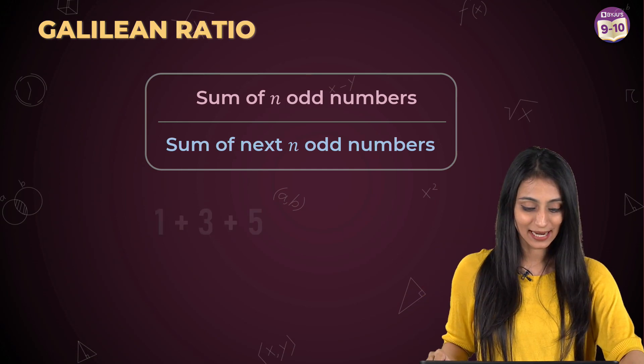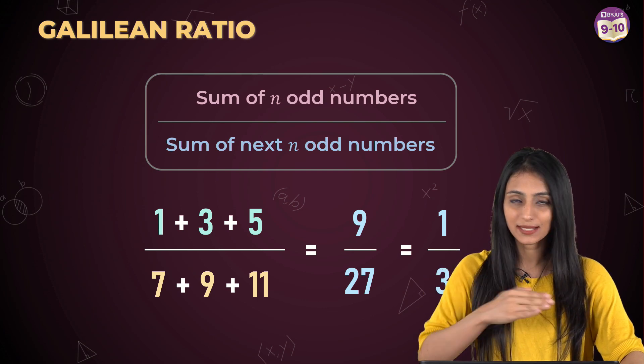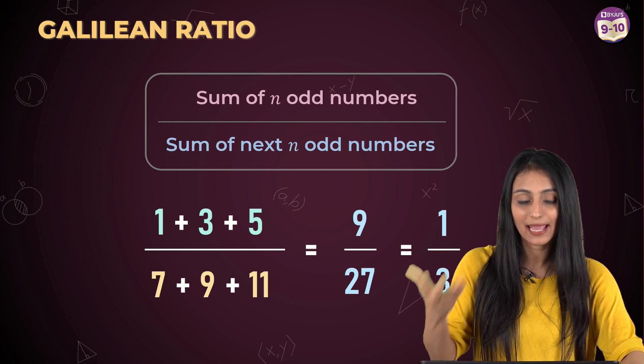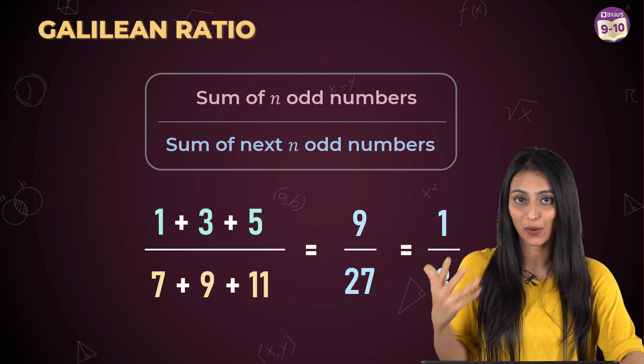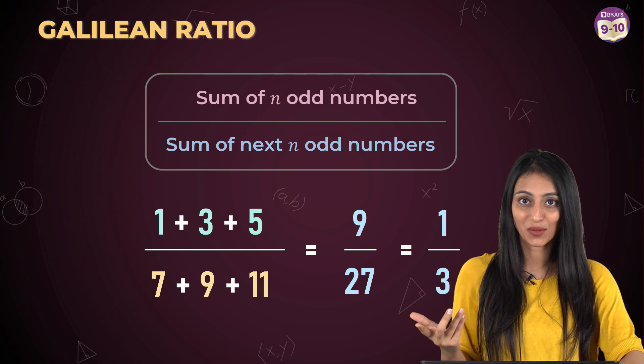Let's take an example to understand this. Let's suppose I have 1, 3 and 5. All these are odd numbers and they are in the order. And the next n odd numbers are 7, 9 and 11. Next three odd numbers. So it's 9 by 27 that is 1 by 3, which is a constant.